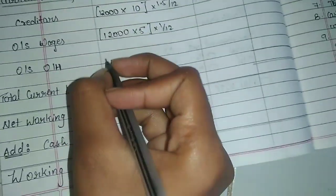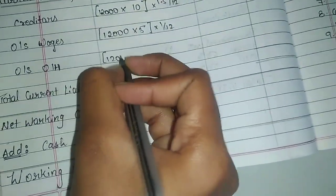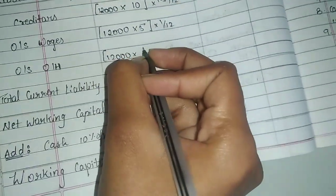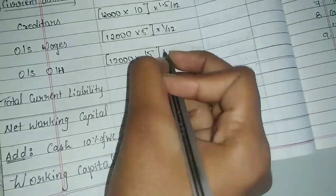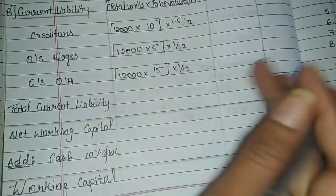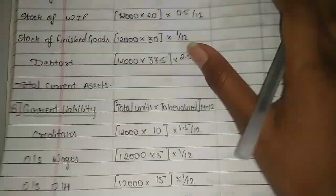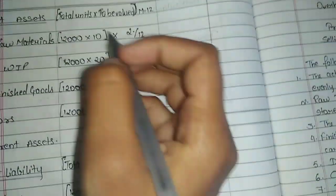Now creditors side: creditors 12,000 into 10 into 1.5 divided by 12. Outstanding wages 12,000 into 5 into 1 divided by 12. Overhead 12,000 into 15 into 1 divided by 12. We will solve these.